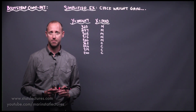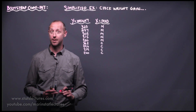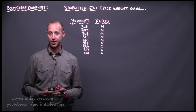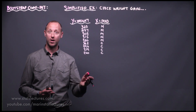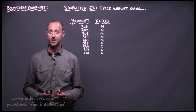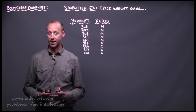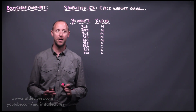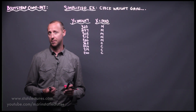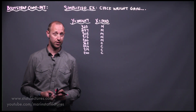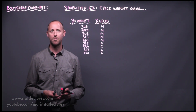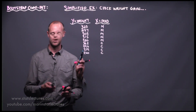Here we have a simplified example looking at chick weight gain. When these chicks are born they're given one of two diets — meat meal or casein — and after six weeks their weight gain is measured. We want to compare these two diets to decide if there is a difference, and specifically whether one diet is more effective for weight gain than the other.